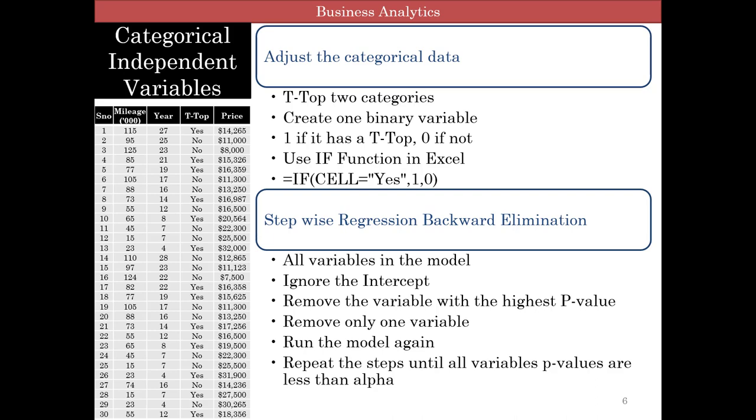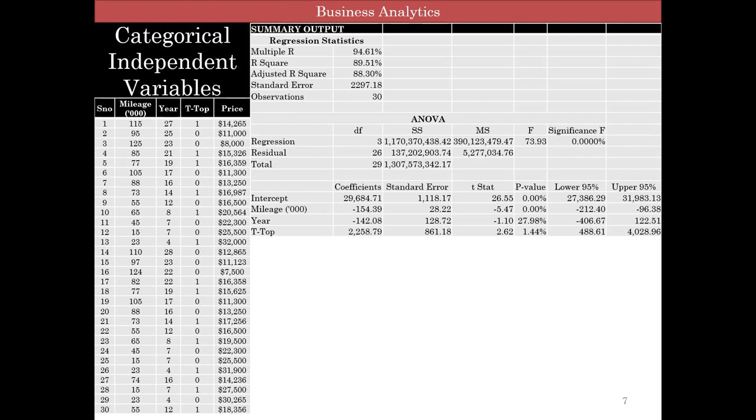So when we ran the first model with mileage, with year and T top, we were able to explain about 88.3% of the change in price due to the change of these three variables. Standard error was about $2,297. And the model was pretty significant. But looking at the coefficients, we could see year was not significant. And so therefore, it had to go. So we were looking at increase in mileage decreases the price, increases the number of years, decreases the price. And I'm pretty sure if you look around a correlation between mileage and year, you'll probably see a strong correlation there. And T top was a positive impact. So if you had a T top, you would essentially pay more for that. So P value is greater than alpha here. We are going to remove year.